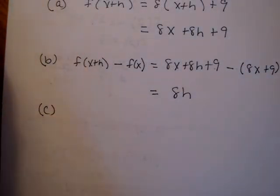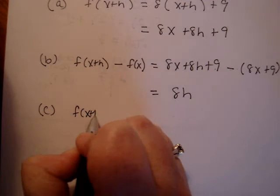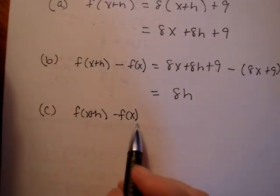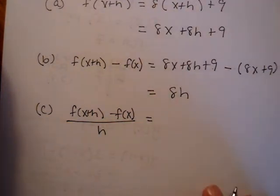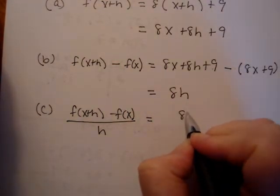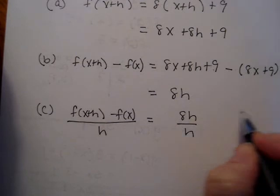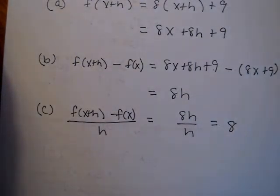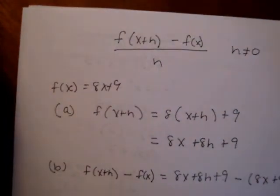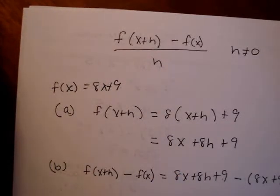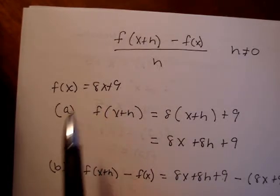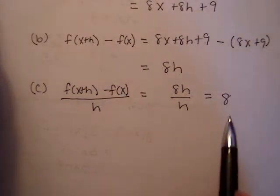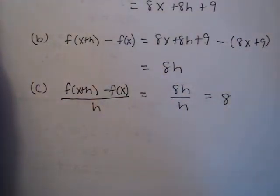Part c, the last step is to then take the answer you got from b, which remember was f of x plus h minus f of x, and now divide that answer by h. So what was our answer from b? It was just 8h. And I'm going to divide that by h, and I get 8. Now that's interesting, because the original function was, wait, what was it, 8x plus 9. Now, if you recall, that's a line, if I graph it, and the slope of that line is 8. And when I simplified the difference quotient, I got 8, the slope. We'll talk about that more later.